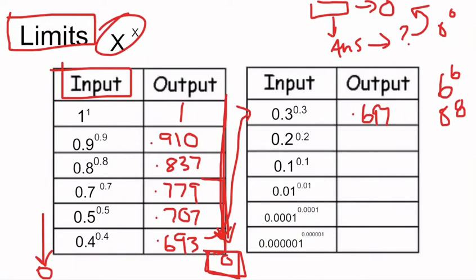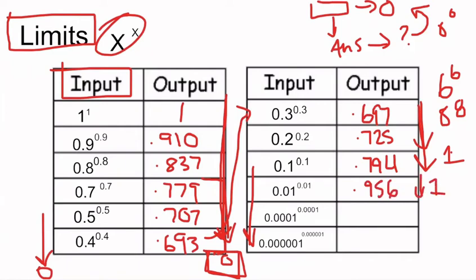Let's continue: 0.2 to the power of 0.2 is 0.725, and 0.1 to the power of 0.1 is 0.794. So now instead of approaching zero, we're getting bigger and bigger, and it looks like we're approaching 1. Going even smaller — 0.01 to the power of 0.01 is 0.956, and 0.0001 to the power of 0.0001 is 0.99907. We're getting very close to 1.